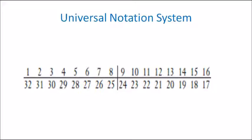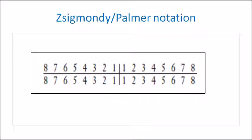In the Zsigmondy-Palmer notation for permanent dentition, the entire dentition is divided into four quadrants — upper right, upper left, lower right, and lower left. Teeth are numbered from the central incisors to the third molars as 1 to 8: 1 = central incisor, 2 = lateral incisor, 3 = canine, 4 = first premolar, 5 = second premolar, 6 = first molar, 7 = second molar, 8 = third molar. Each tooth is represented by its quadrant symbol.